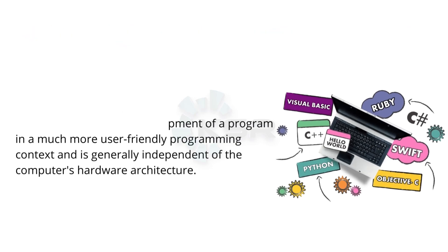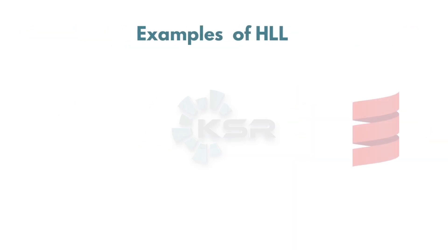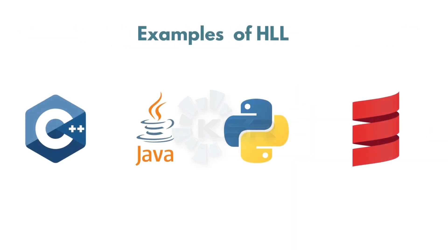A developer who writes instructions in a language resembling English — when we write those instructions, these kinds of programming languages are called high-level. Take C, C++, Java, Python, Scala — any programming language you see today is a high-level programming language, because humans can understand and write those instructions.